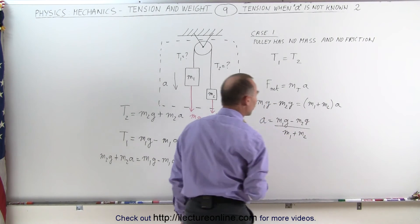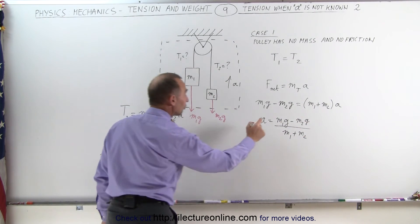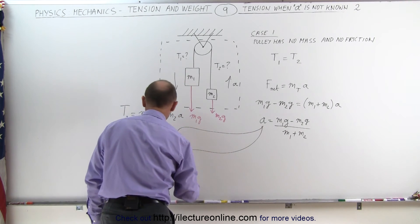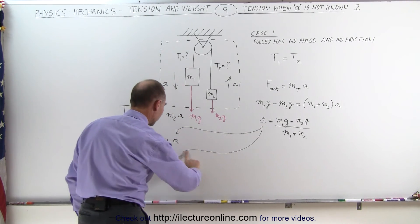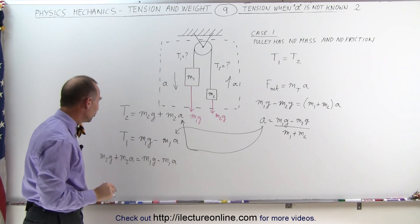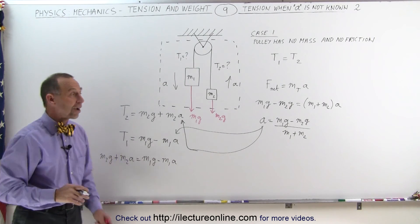Knowing the masses of those two objects and of course knowing that G is 9.8 meters per second squared, that allows us to find A. And then A will get inserted into these two equations to find tension 1 and tension 2. And ultimately of course then you can compare them to each other and realize they are the same.